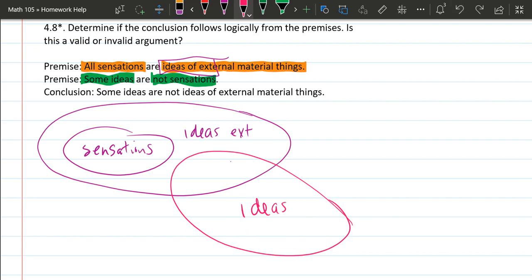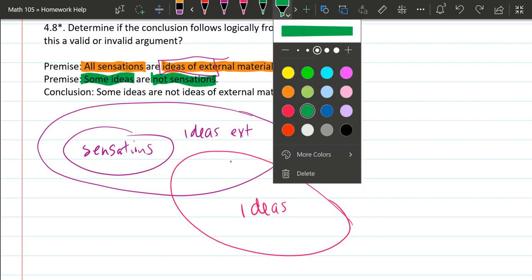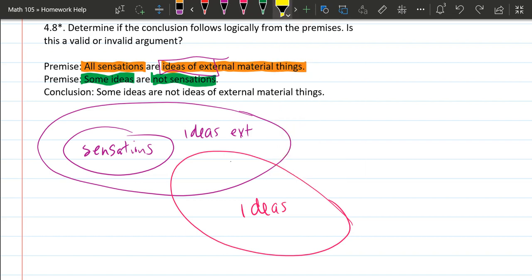So now ready to look at the conclusion. Let's grab a third highlight color. Now it says some ideas are not ideas of external material things.